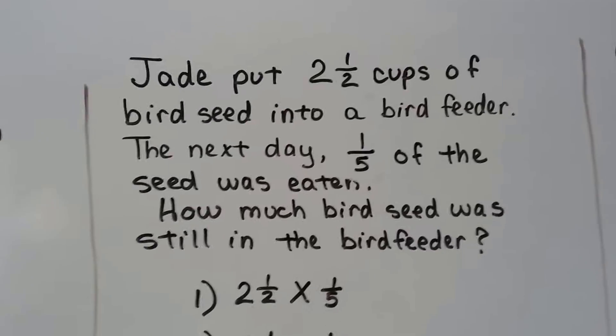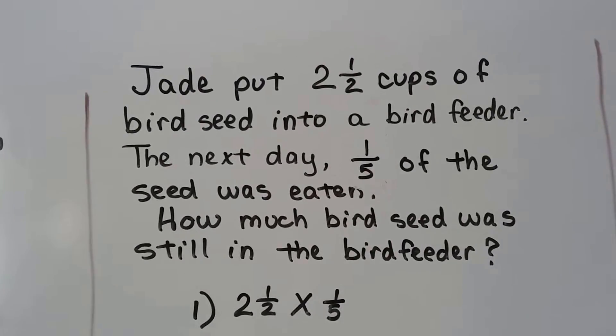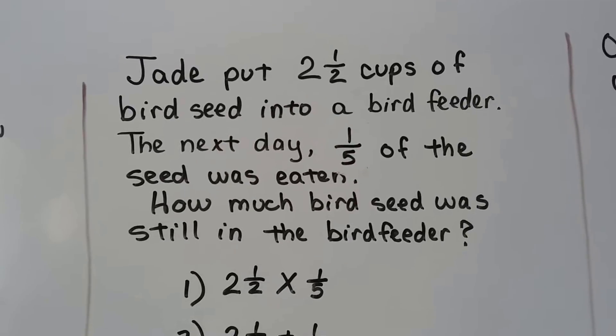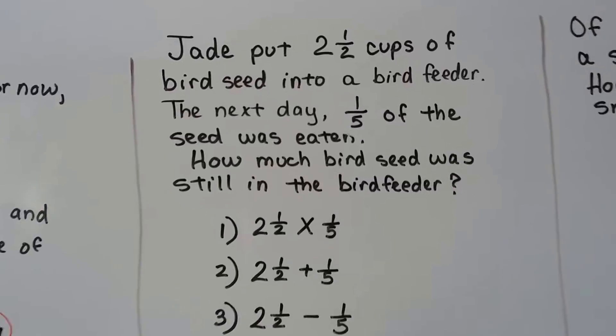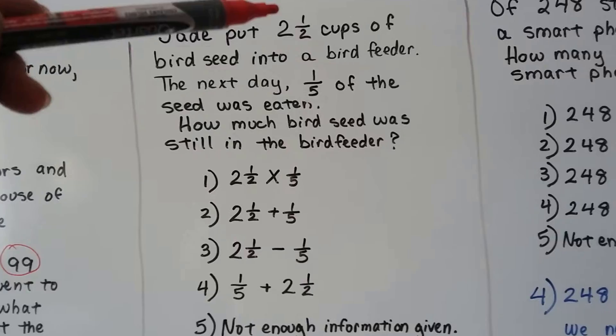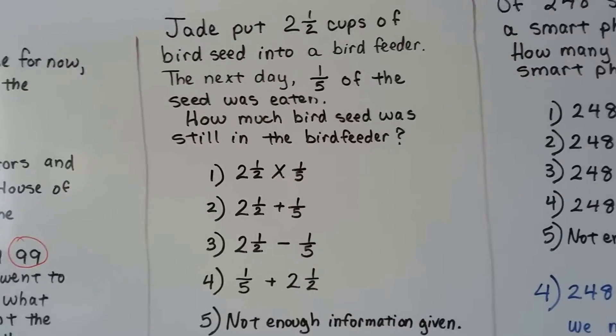Jay put two and a half cups of birdseed into a bird feeder. The next day, one fifth of the seed was eaten. How much birdseed was still in the bird feeder? So which of these equations would help us solve the problem? There's two and a half cups in the bird feeder. The next day, one fifth was eaten.